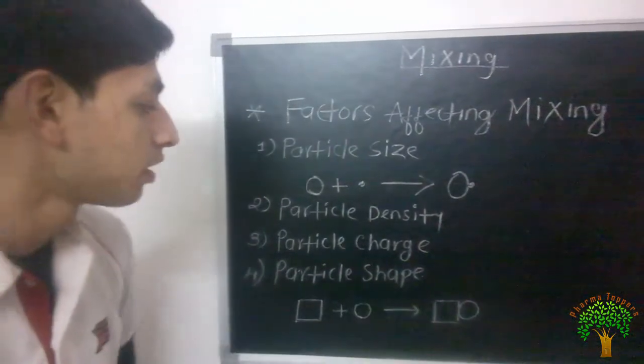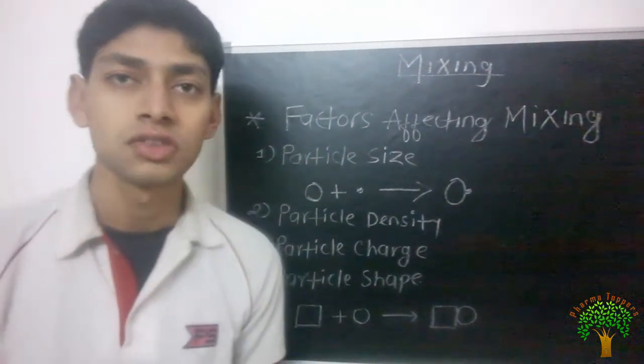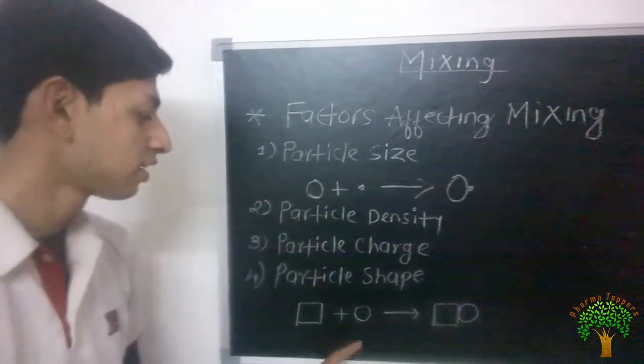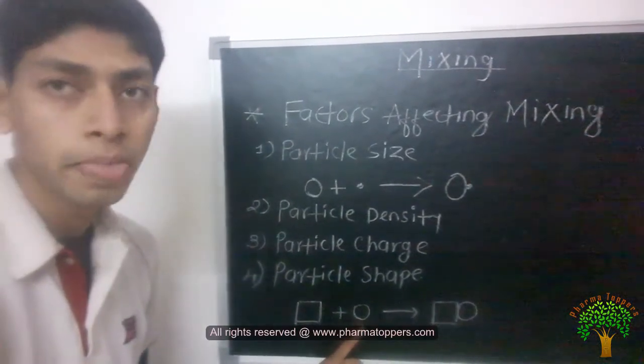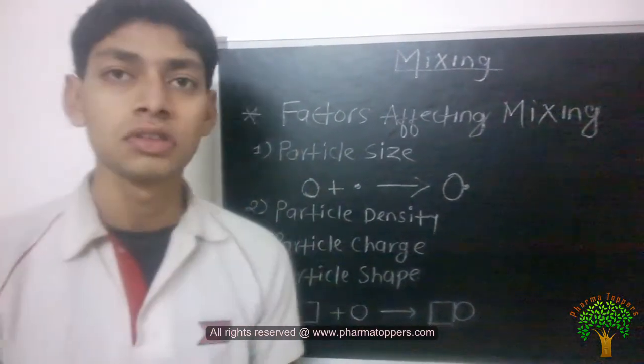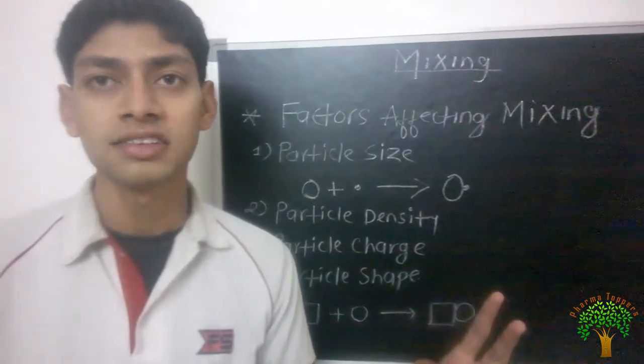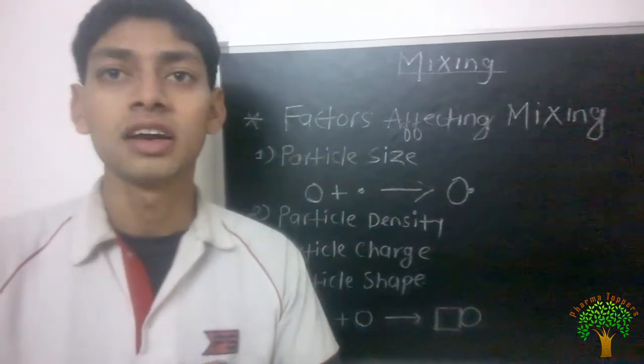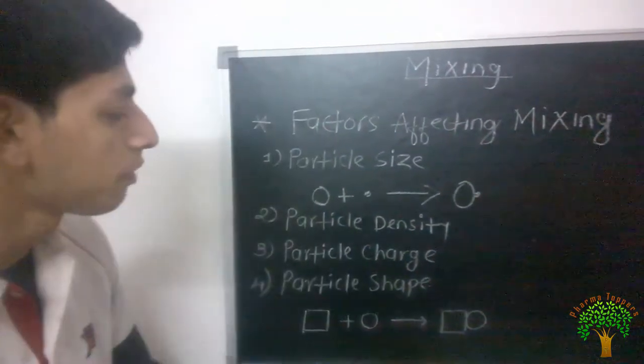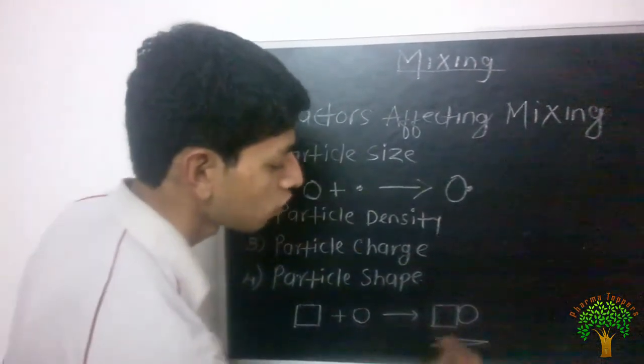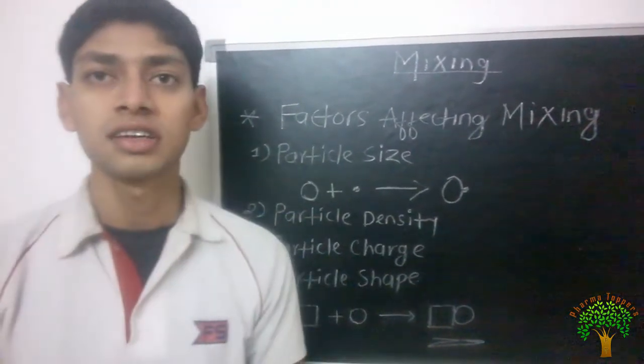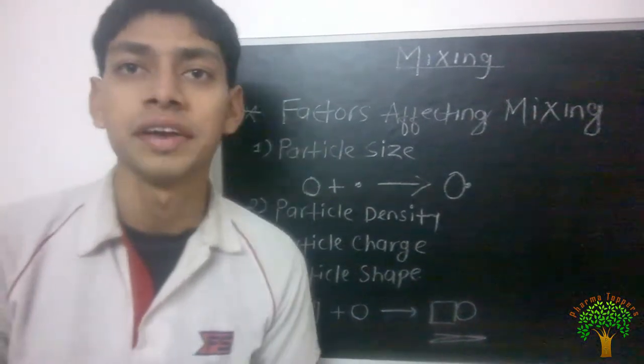Apart from that particle shape. Some particles have square shape and some particles have spherical shape. Now suppose these particles, different particle shapes are come to each other for the mixing process. It will not be for uniform mixing. Because the shape difference can lead to the improper mixing. That's all.